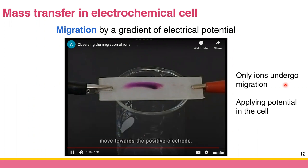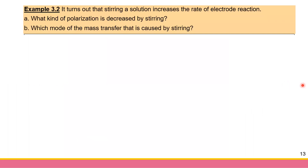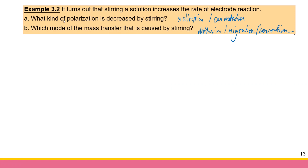Let's do Example 3.2. One important finding is that stirring a solution increases the rate of the electrode reaction. Question A: what kind of polarization is decreased by stirring? Question B: which mode of mass transfer is caused by stirring — is it diffusion, migration, or convection? And for A, is it activation polarization or concentration polarization?